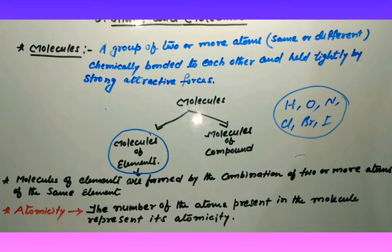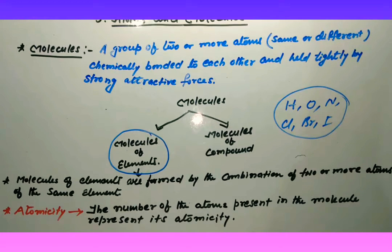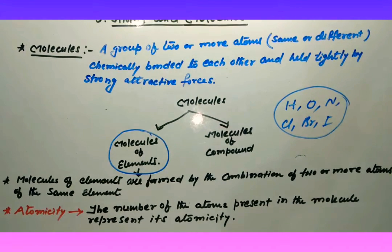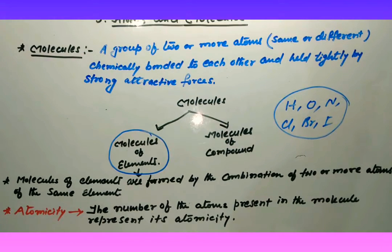Now before going into examples, we need to know what atomicity is. What is atomicity? Atomicity - the number of atoms present in the molecule represents its atomicity. Ab atomicity kya hai? Kisi bhi molecule mein jo number of atoms present hota hai students - usse represent karte hain - jise hum log kya kehta hai? Usi ka atomicity.